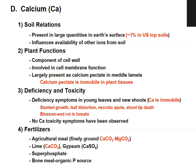Calcium deficiency appears on the inner leaves and new shoots because calcium is immobile in nature. It shows stunted growth, distortion of leaves, and necrotic spots that appear brownish. A characteristic deficiency disorder is blossom end rot in tomato.